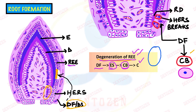When can gap happen? When root dentine has started forming but HERS does not break down - it remains attached over the cervical region. Below that, cementum has formed from dental follicle cell differentiation over the dentine, but at the cervical region near the cervix, HERS remains attached. When it later separates from that region, there will be nothing over the dentine - dentine will be exposed and there will be a gap between cementum and enamel.